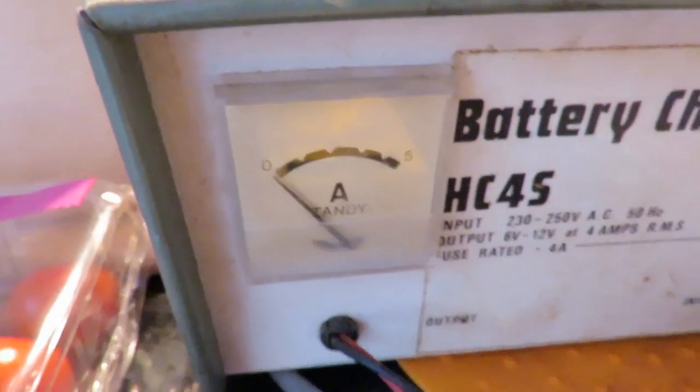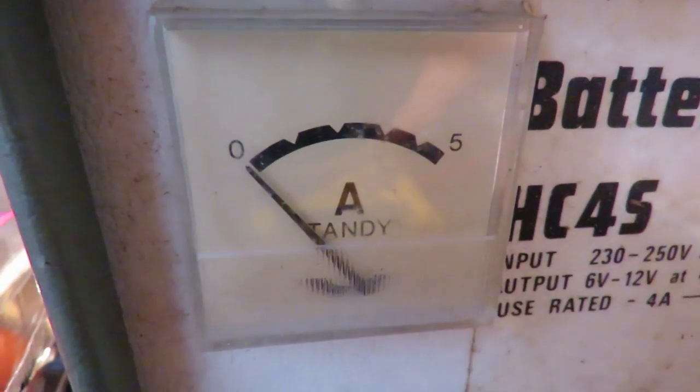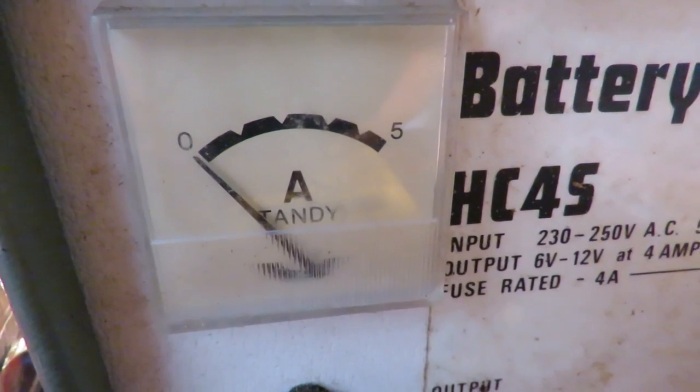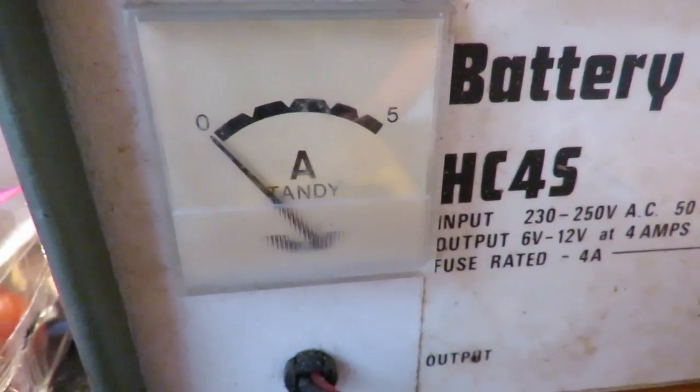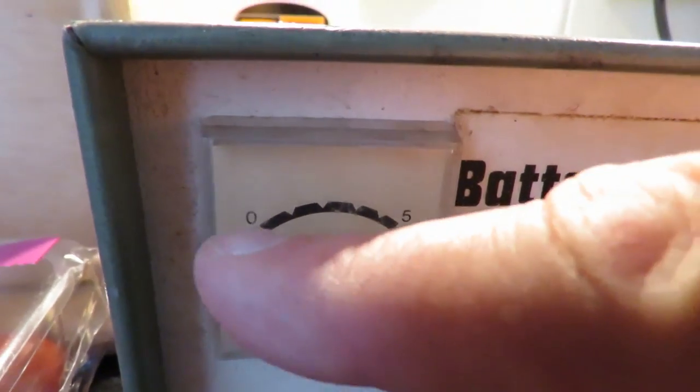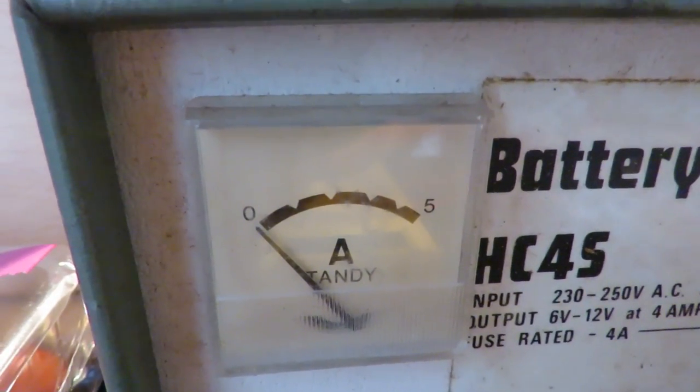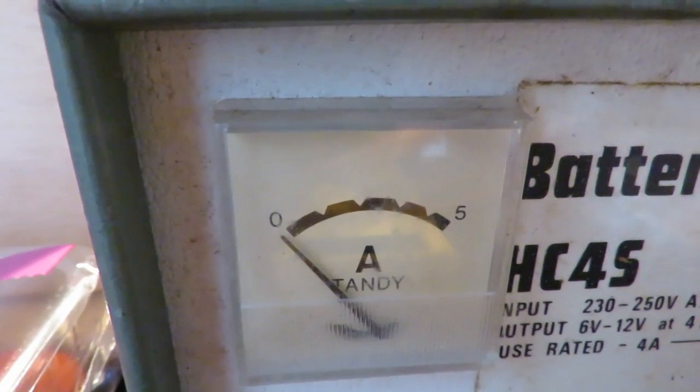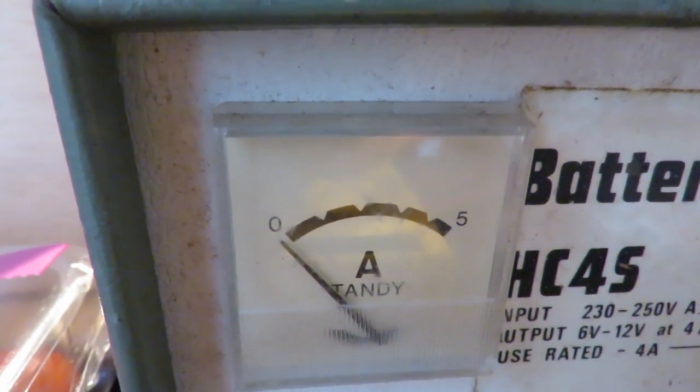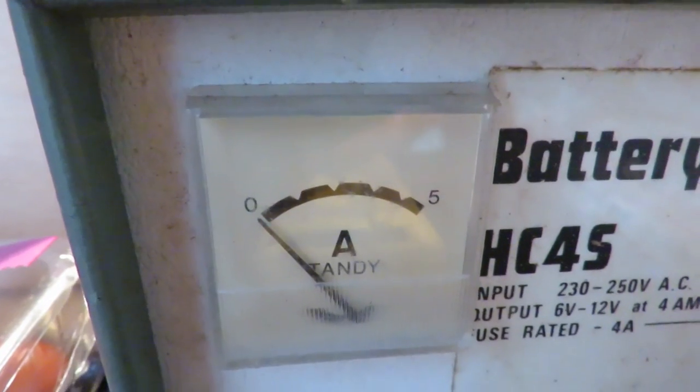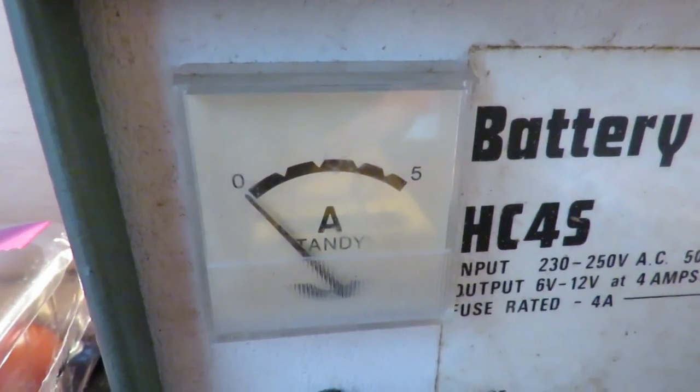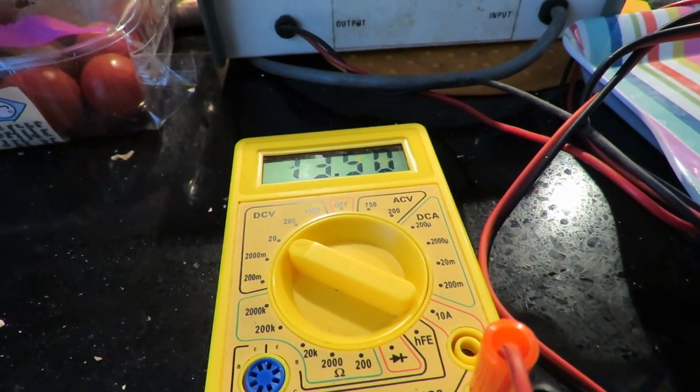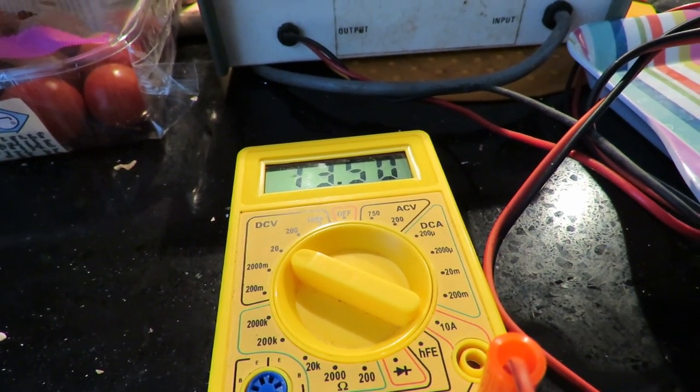According to the amp meter it's actually putting virtually nothing into it, although originally it was right off the scale. When I put the charge into it it just goes up a tiny bit. So I'll give it about another five cycles and then I'll go to six volts.